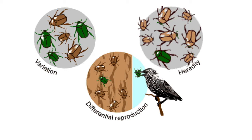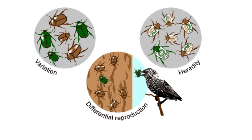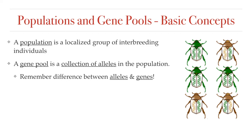What Darwin knew was that variation in a trait was required for natural selection to occur, and he knew that the trait needed to be passed down to offspring, but he didn't really know about genes or alleles. That understanding came to biologists later with the discovery of DNA. So now we understand that the variation in a population required for natural selection is, in fact, due to a variation in the alleles for a particular gene found in a particular population.